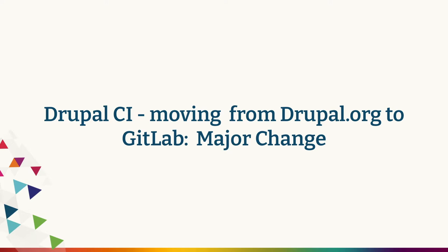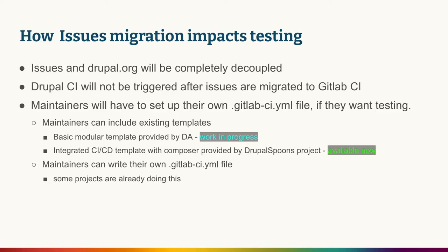Issues migration will bring a major change. Testing will change from bespoke centralized Drupal CI and will be replaced with GitLab CI. The reason why we need to completely switch to GitLab CI is because once issues are migrated, issues on Drupal.org will be completely decoupled and Drupal CI cannot be triggered. So the implication is that maintainers will have to set up their own GitLab CI file if they want testing for their contributed modules.